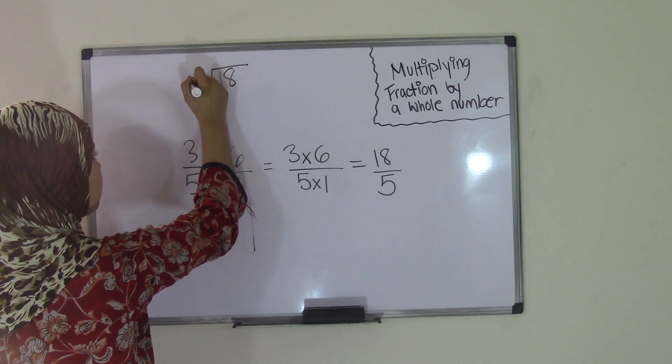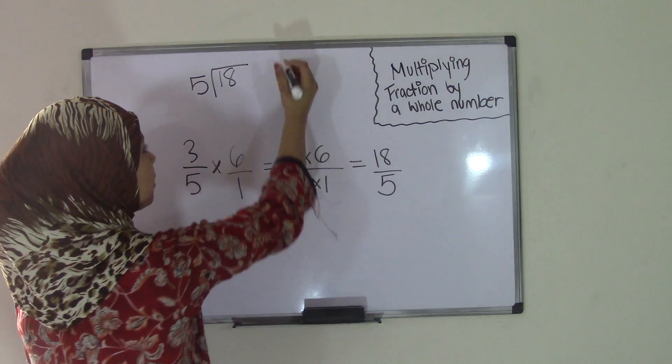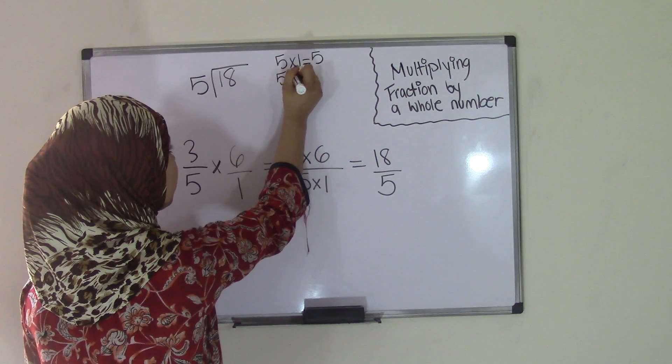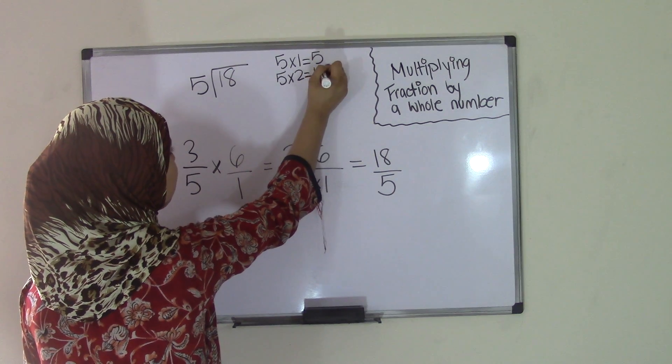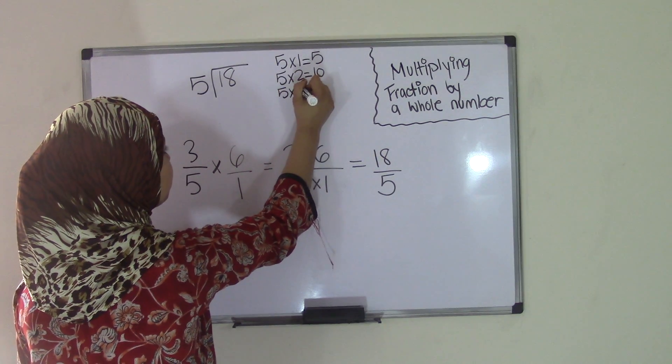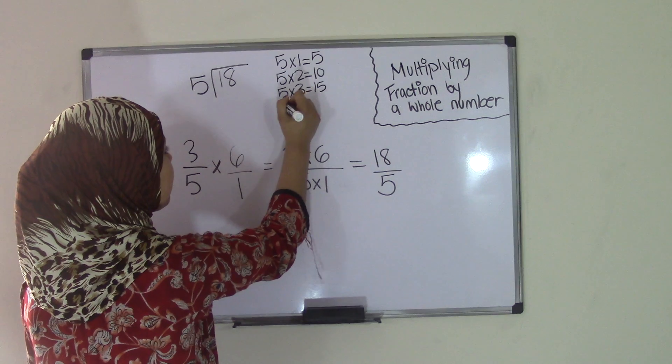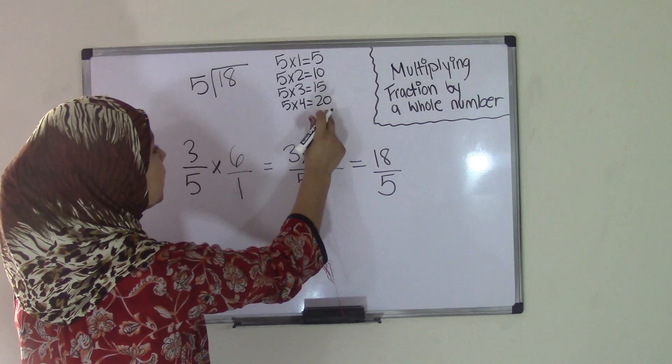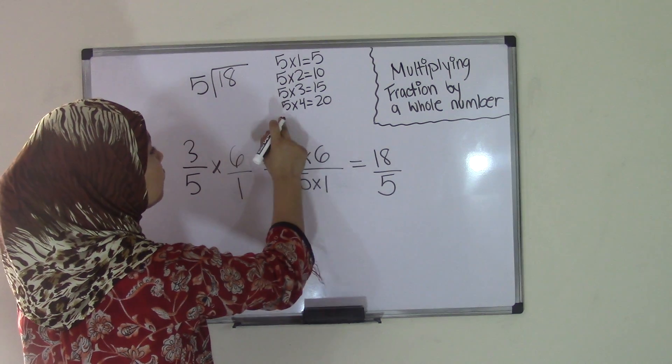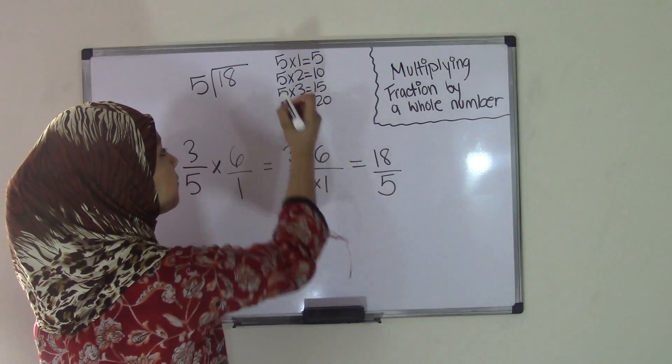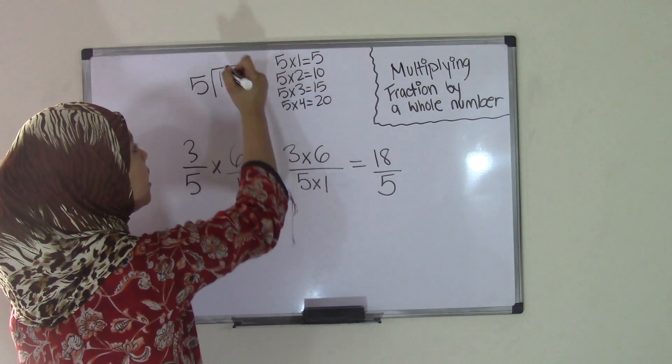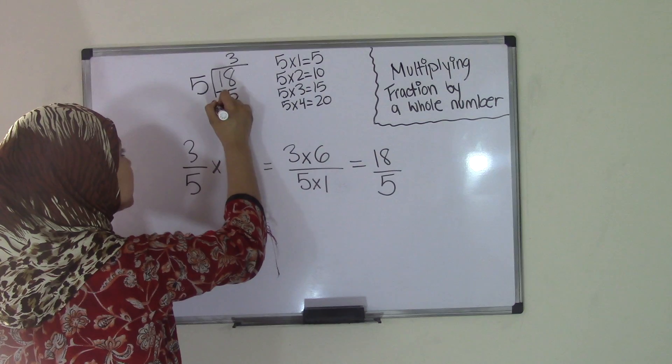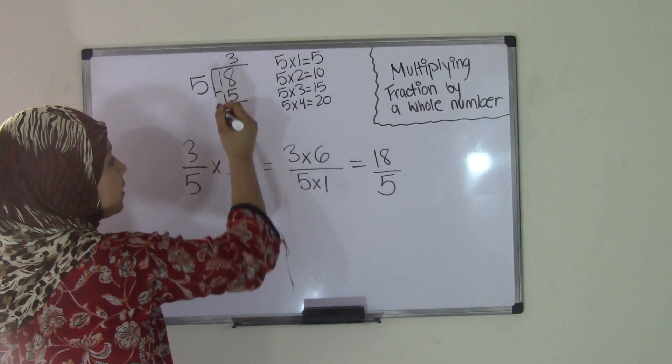So if we were to do 18 divided by 5, we know from our times table that 5 times 1 is 5, 5 times 2 is 10, 5 times 3 is 15. Now 5 times 4, as we all know, is 20. But 20 is greater than 18, so we can't do 5 times 4. So the best option we have is 5 times 3, which equals 15. So 5 times 3 is 15. Now we have to subtract 18 and 15, and the difference equals 3.